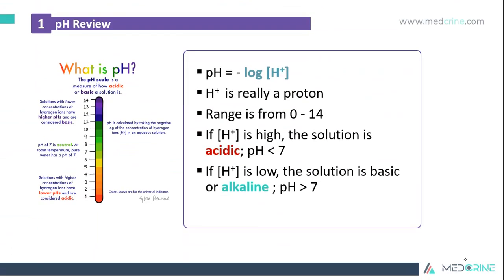We start with defining pH. A pH is a negative log of hydrogen ions, and hydrogen ions are protons in nature. A pH scale is a measure of how acidic or basic a solution is. Solutions with lower concentration of hydrogen ions have a higher pH and are considered basic, while solutions with higher concentration of hydrogen ions have a lower pH and are considered acidic.